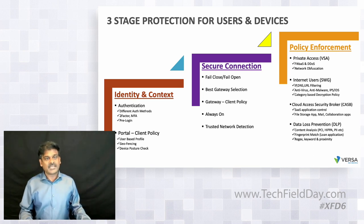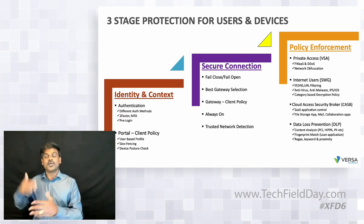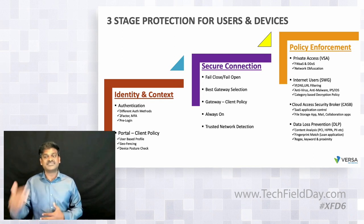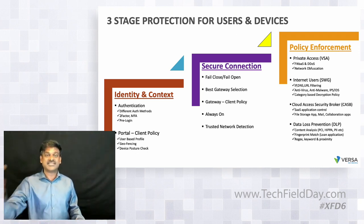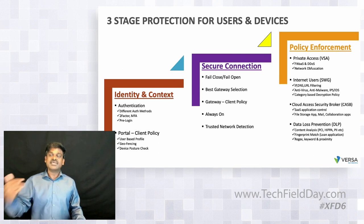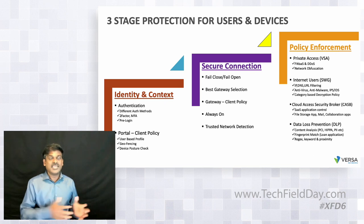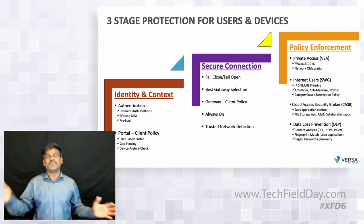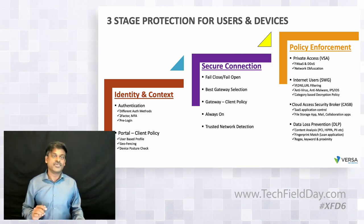Beyond the registration process, we also continuously validate the user, location, and device posture at gateway connection time. If the device posture has changed since registration, it is re-validated at connection. If the user has moved, the new location is checked for trust. We also use AI/ML methods to detect impossible movement vectors — for example, simultaneous login attempts from two physically impossible locations — and those connection attempts are denied.